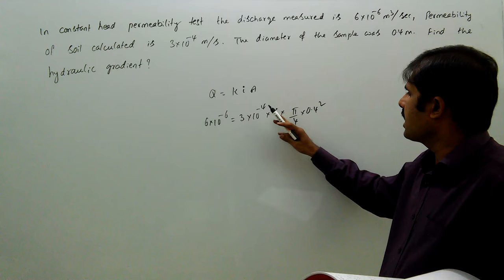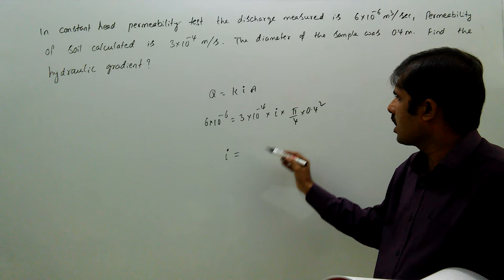All units are in meters and seconds only. This is meter cube per second, this is meters per second, i has no units, this is in meters square.